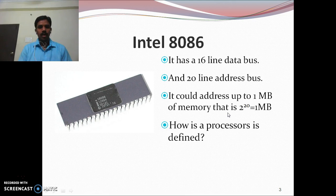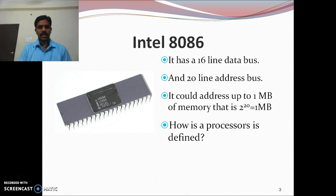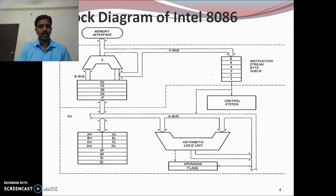Now, how is a processor defined? The processor is always defined based on its data lines. The 8086 is a 16-bit microprocessor — it is defined as such because it has 16 data lines. Coming to the architecture of the 8086, it has 2 independent units: the Bus Interface Unit and the Execution Unit.